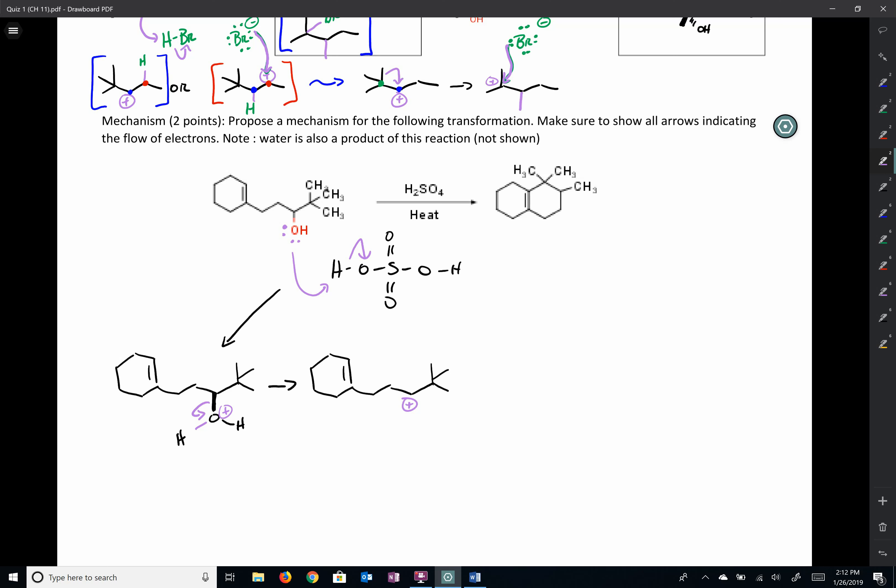Every time we generate a carbocation, we pause and ask ourselves the quintessential question, can I do a rearrangement? So we look next door, we see a quaternary carbon, quaternary next door to a secondary carbocation. That's set up for an alkyl shift. So alkyl shift.